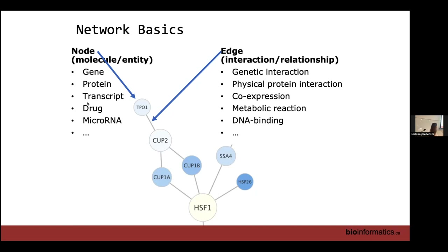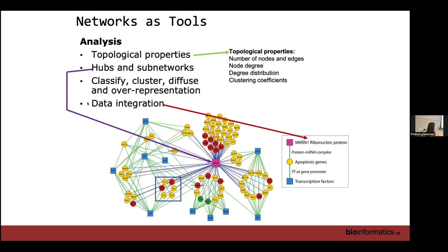Edges can represent a genetic interaction in a gene-gene network, a physical protein interaction in a protein-protein interaction network, or co-expression — two genes expressed similarly might have an interaction. I specifically mention this because we've done enrichment analysis and we're not initially going to create traditional protein-protein interaction networks. We're going to create networks where each node is a gene set and the edge between them represents shared genes between pathways.